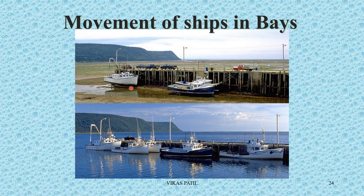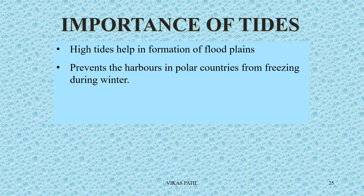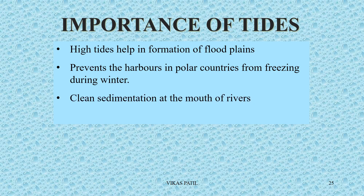Big ships and boats find it easy to come into the bay with the high tide and leave the bay with the low tide. Then, high tides also help in the formation of floodplains as they push river water back and the river water spreads sideways. The continuous movement of water during high tide and low tide also prevents harbours in polar countries from freezing during winter — otherwise, if the water remains still, it will freeze and those harbours become non-usable. Continuous high tide and low tide also cleans the sedimentation at the mouth of rivers.